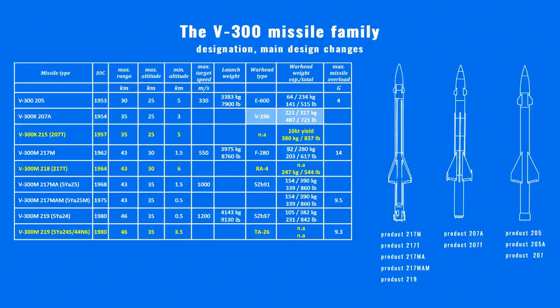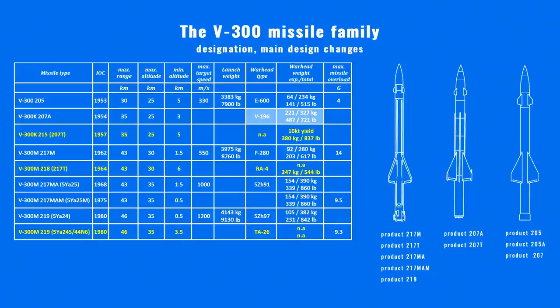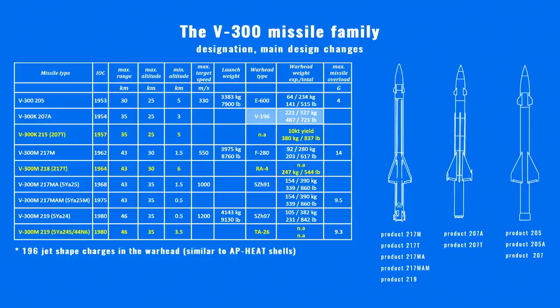The 207A type got the different V-196 type warhead with 196 stacked multi-jet shaped charges, similar to what was used in armor penetration warheads. The idea was that the many small jets would hit and damage the targets. The warhead weight was 327 kg, of which the explosive filler weighed 221 kg. 9,467 missiles of this type were made.